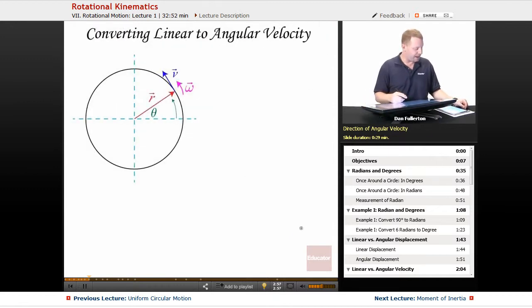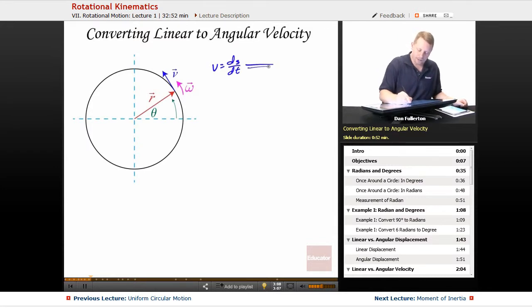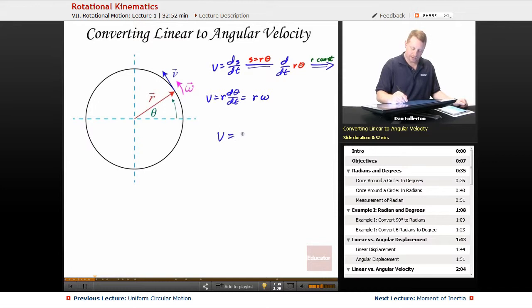Okay, converting linear to angular velocity. Remember we had velocity is the rate of change of position or displacement with respect to time, but we know that s is our r times theta, the radius times theta. Therefore, we could write that this is equal to d over dt of the derivative of r theta. But r is a constant. Our radius isn't changing. So, we could write this then as v equals r d theta dt, which is r omega. d theta dt is r omega. So, v equals r omega. Or if we want omega, omega equals v over r.